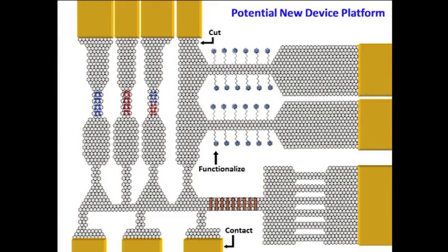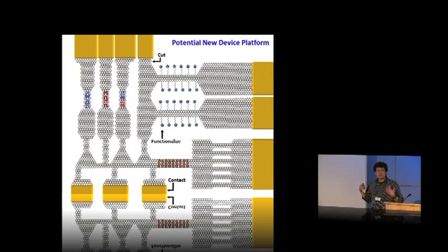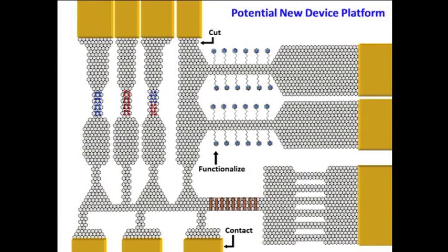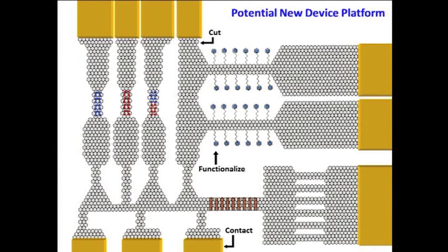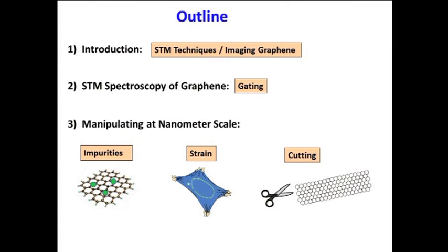Part of that work involves better understanding how graphene behaves at microscopic length scales — at the atomic length scale. What happens around individual atoms, what happens at edges, and what happens when you strain graphene at very small length scales? Those are the kinds of questions I'm going to talk about today: impurity, strain, and cutting graphene into little nanoribbon shapes.